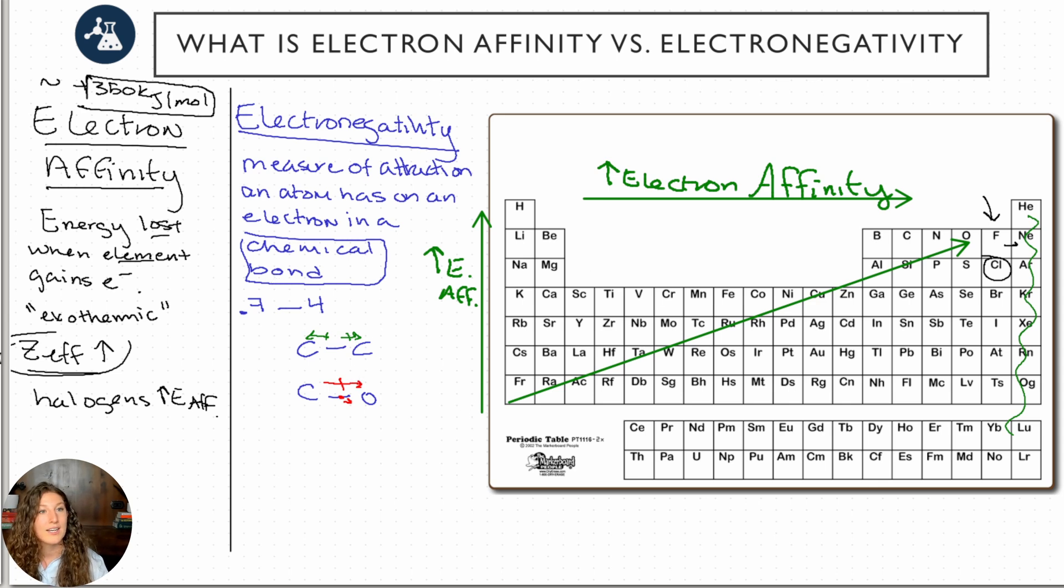Now it has the exact same trend as electron affinity where we increase as we go left to right and we increase as we go down to up, right? So our smallest electronegativity is actually cesium here, it's 0.7, and our highest electronegativity is fluorine at 4. Now again, on the very edges we do have some exceptions. Francium's got a slight exception here. Even though it's bigger than cesium, it actually has a similar electronegativity and doesn't often form bonds.